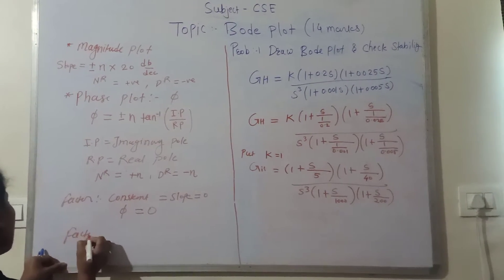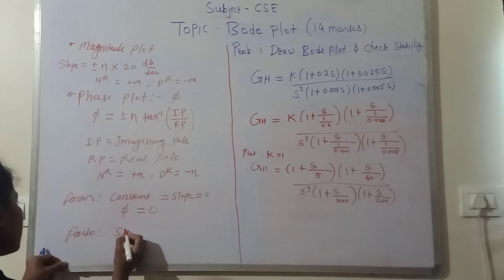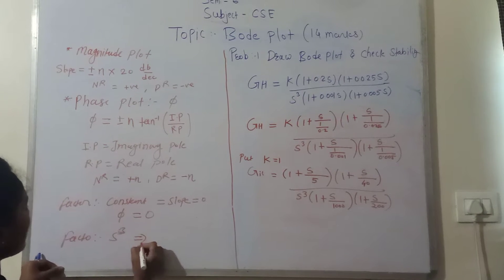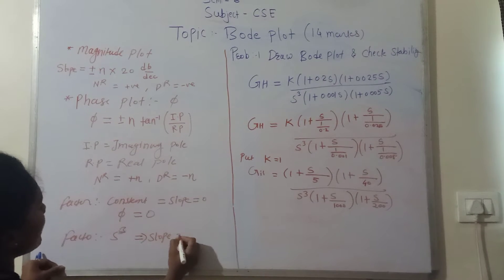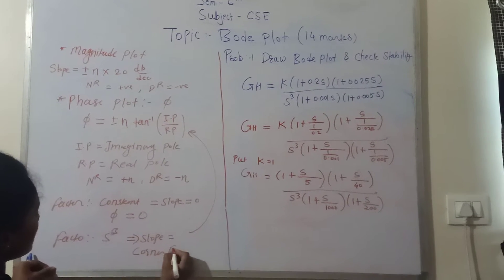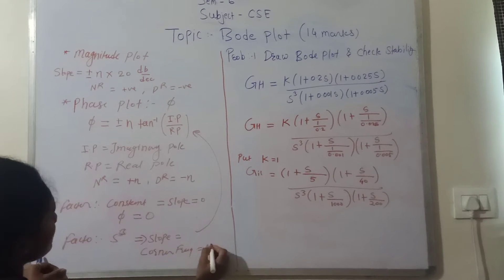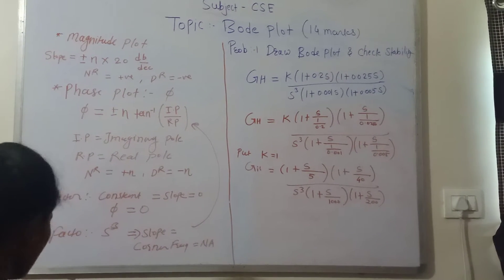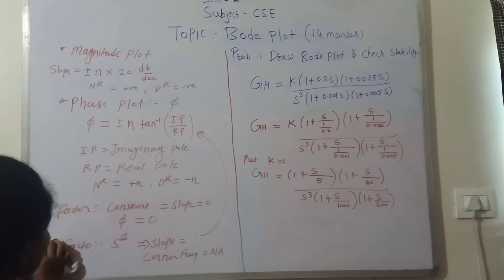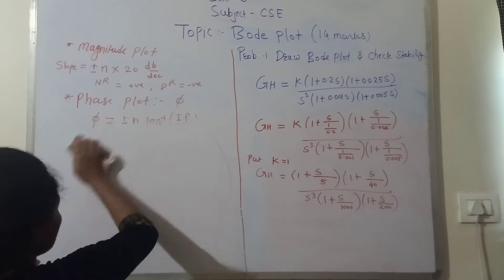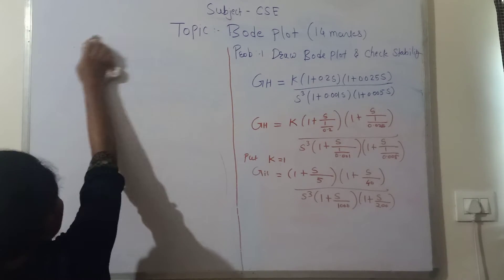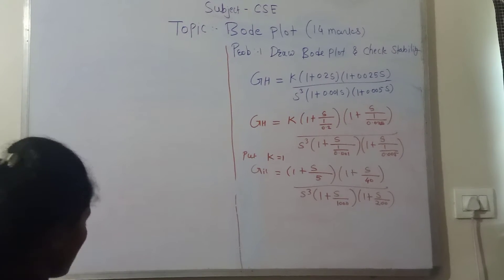If your factor is in the form of single s, s squared, or s cube, then the slope is calculated according to the formula, but the corner frequency for s-form factors is not applicable. For the magnitude plot we require a slope, a corner frequency, and a cumulative slope. Let us see one numerical based on that to find out the Bode plot.